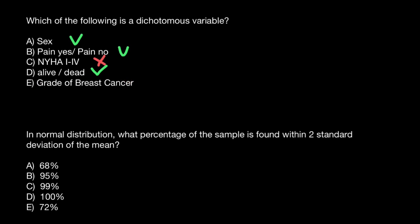And variant E, grade of the breast cancer, is not a dichotomous variable because it has more than two grades. It has four grades, so it is not dichotomous variable. So as you see, the correct answer is going to be answer A, answer B, and answer D.